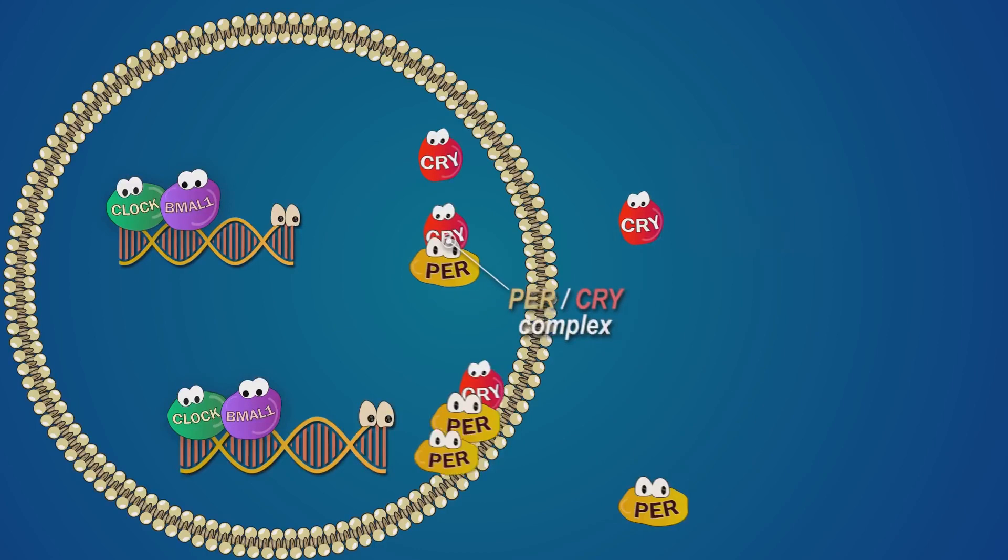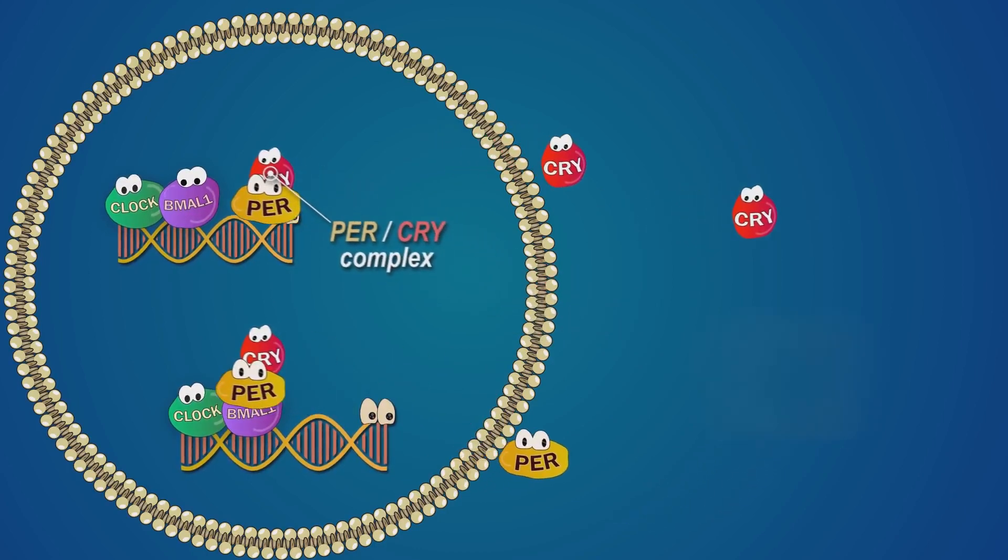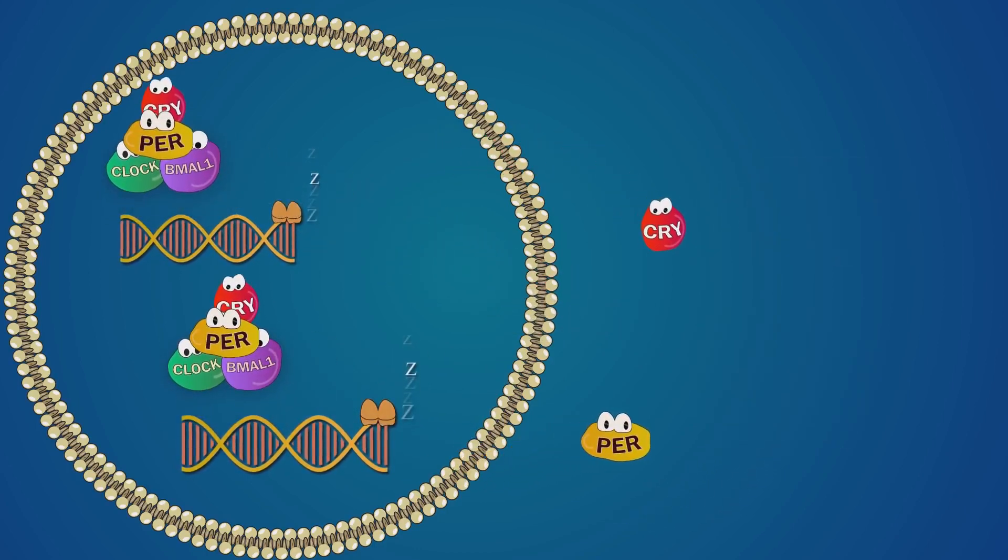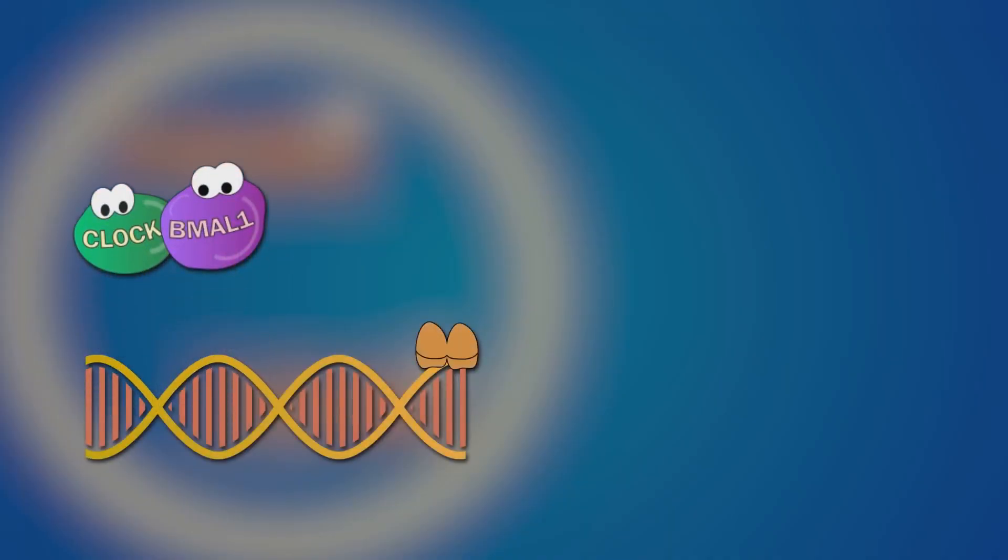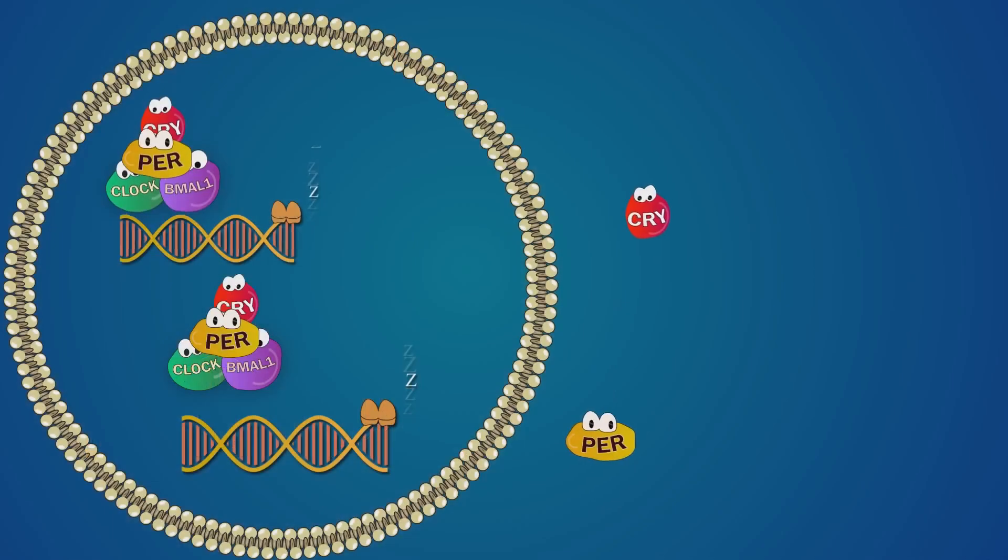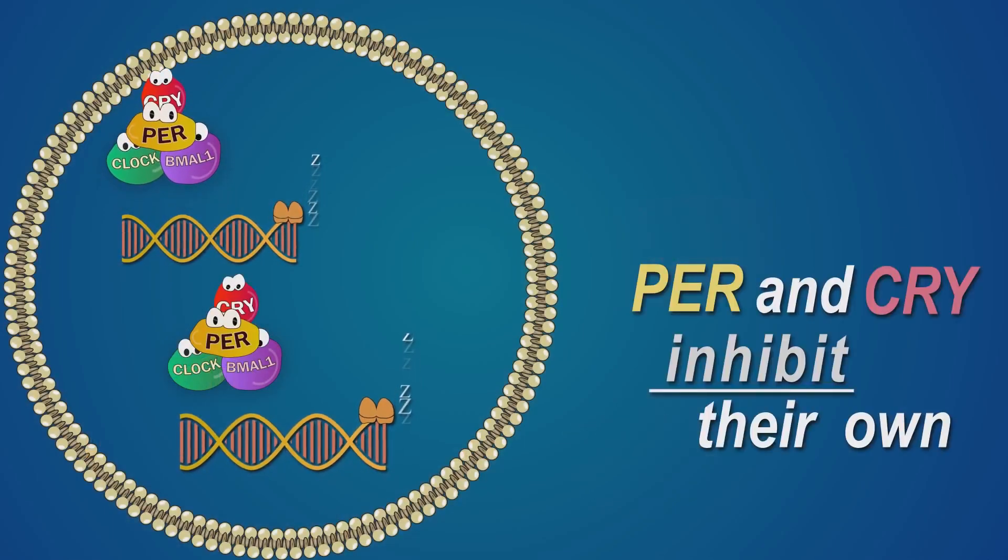In this state of complex, they have an ability to travel back into the nucleus and pull the clock and bmal1 pairs away from the DNA. Do you see what happens? Remember that when the clock and bmal1 are not on the DNA, the gene inactivates. That way, per and cry inhibit their own production.